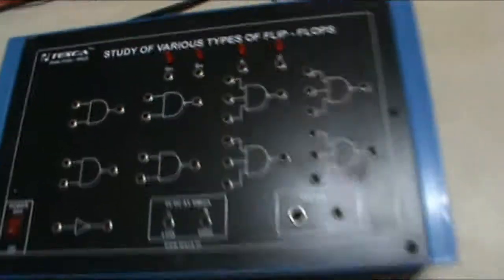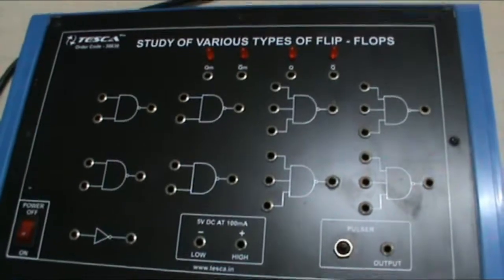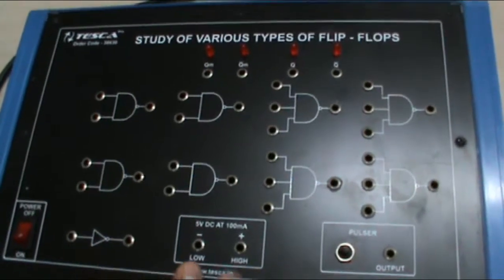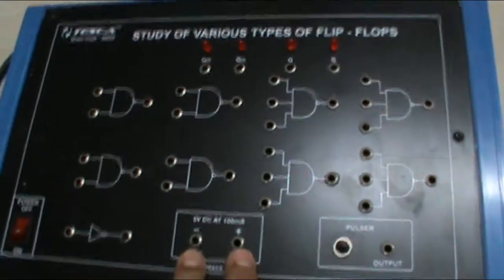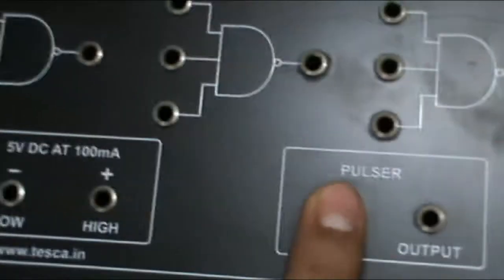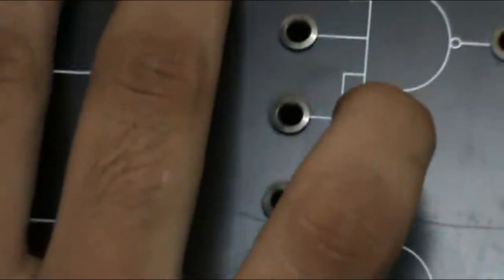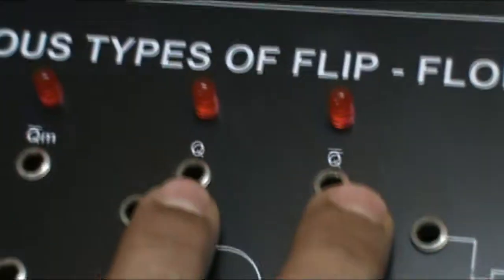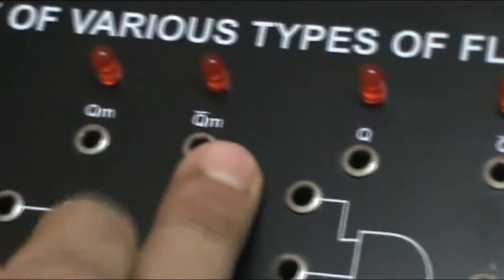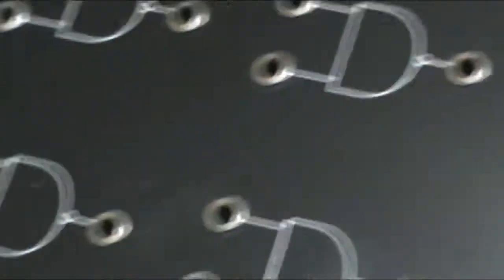In this equipment there are various NAND gates, a NOT gate, a 5V DC supply, a pulsar as clock, and these are the Q, Q-bar output LEDs and QM, QM-bar. This is the main power on-off switch.